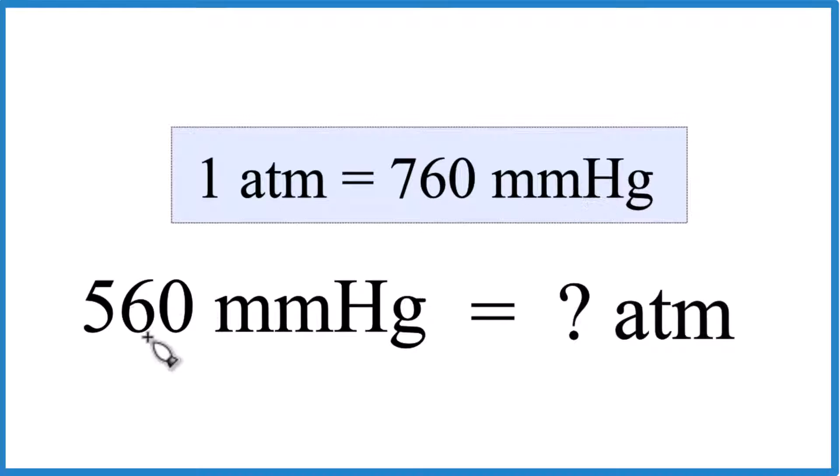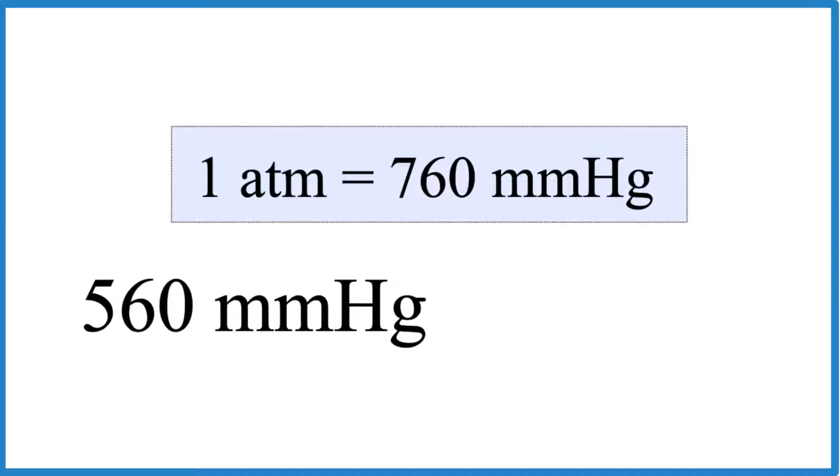And we can use that to get 560 millimeters of mercury here over to atmospheres. So what we'll do is we'll multiply our 560 millimeters of mercury by our conversion factor.